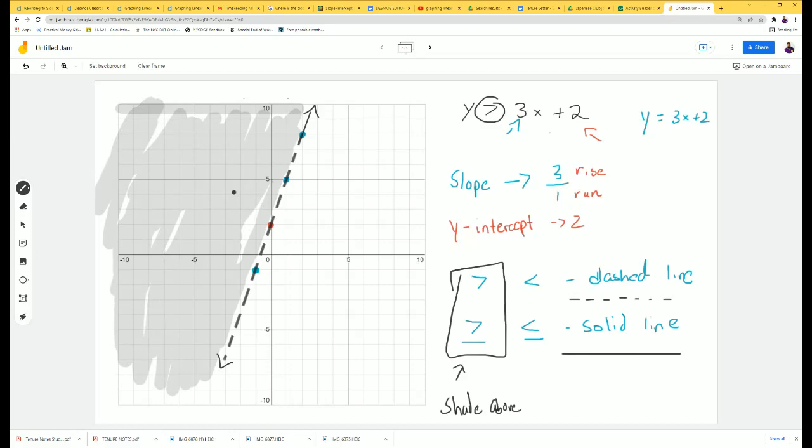If it's less than, you shade below the line. So any point in the shaded area is considered a solution to this inequality. All of these are solutions, but anything on this side would not be.